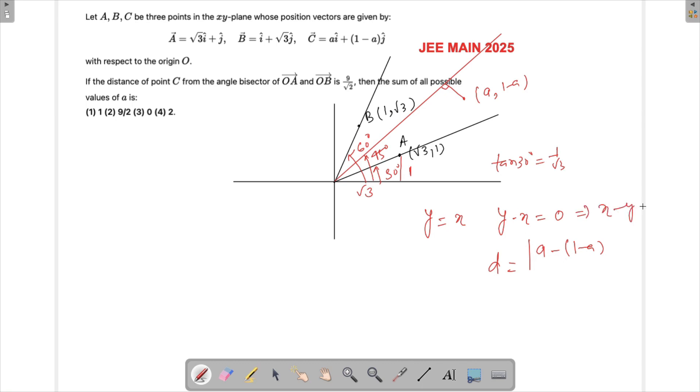So a, and then we could set 1 minus a divided by square root of 1 square plus minus 1 square, 1 square minus 1 square. So the numerator would become 2a minus 1, the denominator would become root 2, and this is given equal to 9 by root 2.